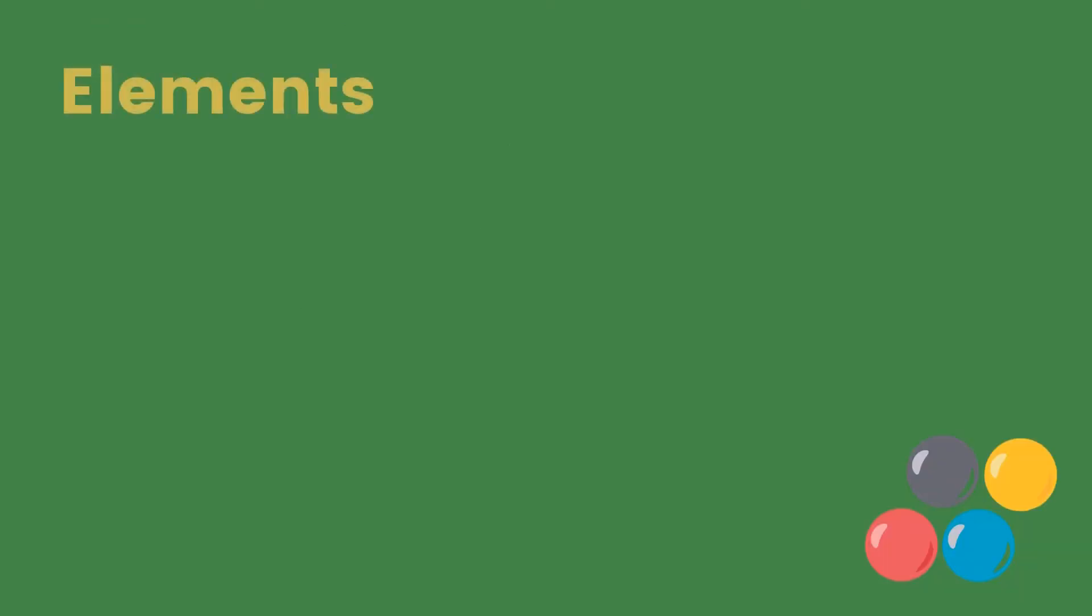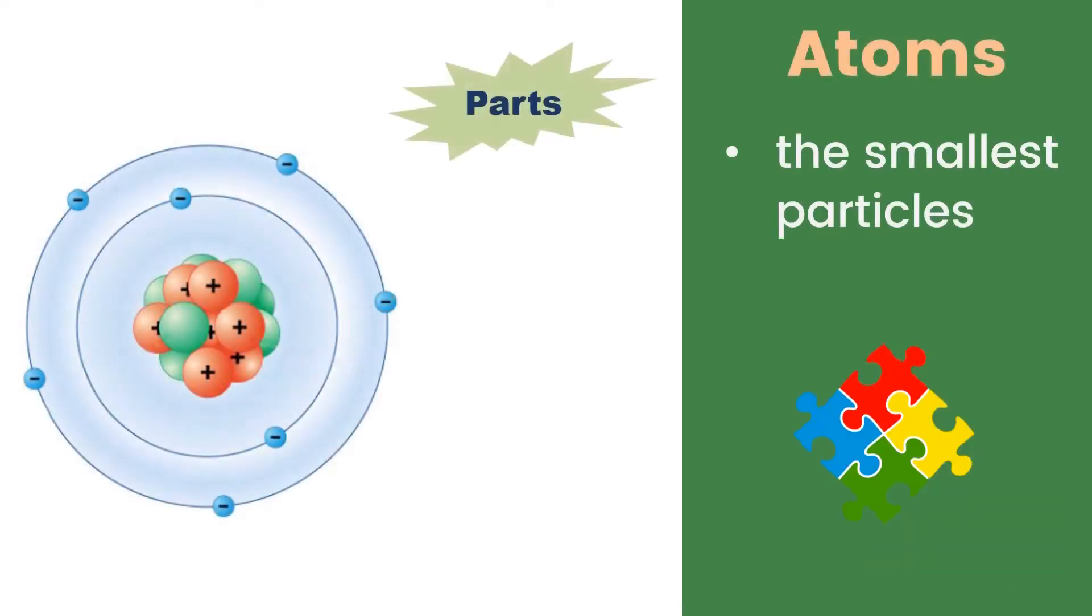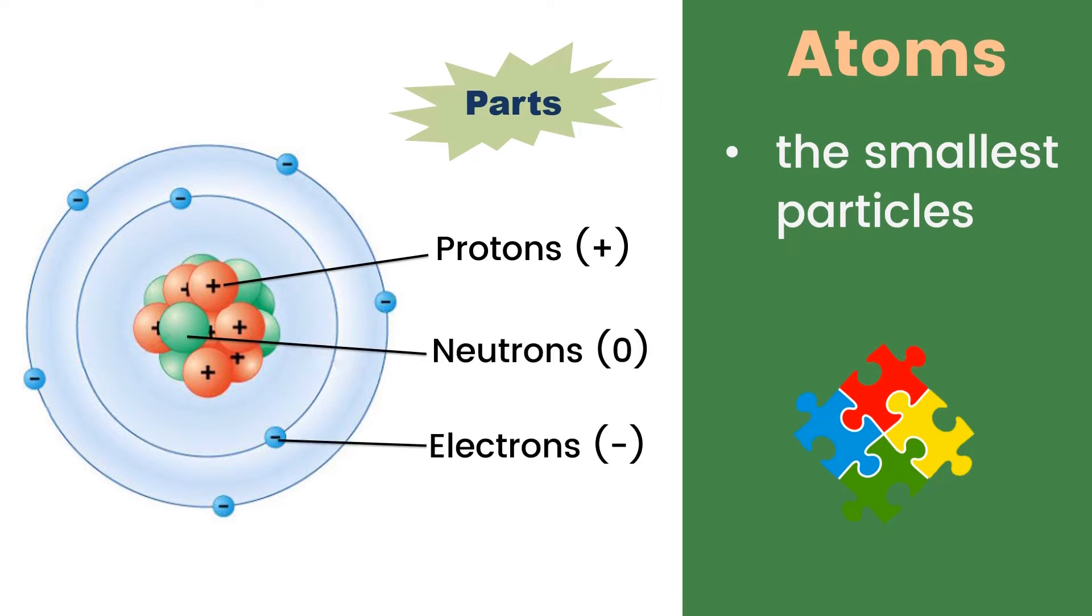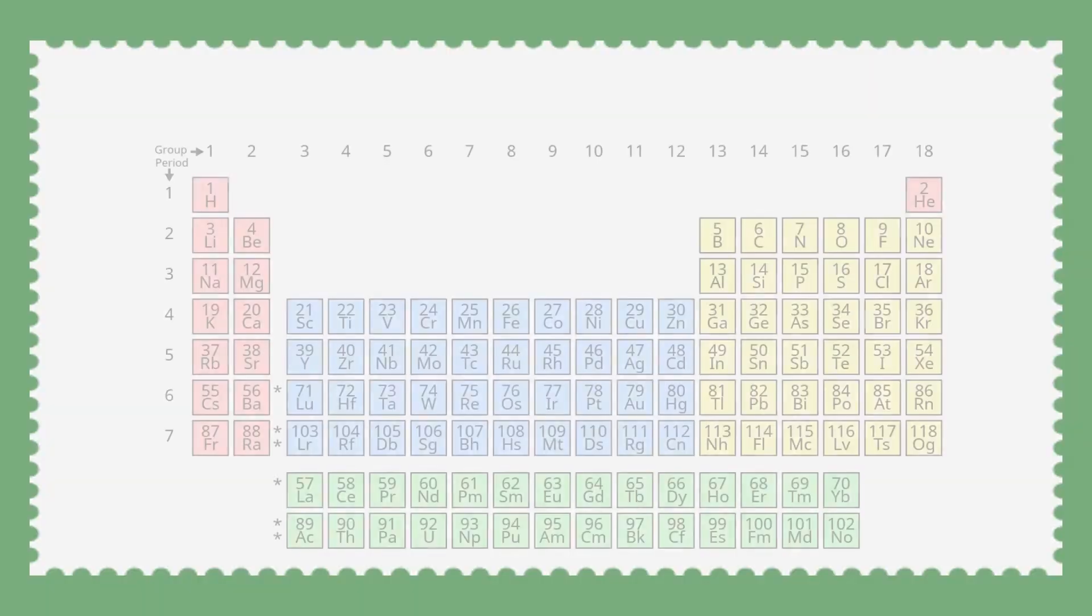Let us first talk about the elements. Elements are the simplest form of matter. They are made up of atoms. Atoms are the smallest particles. Atoms have three parts: protons which are positive charge, neutrons which are no charge, and electrons which are negative charge.